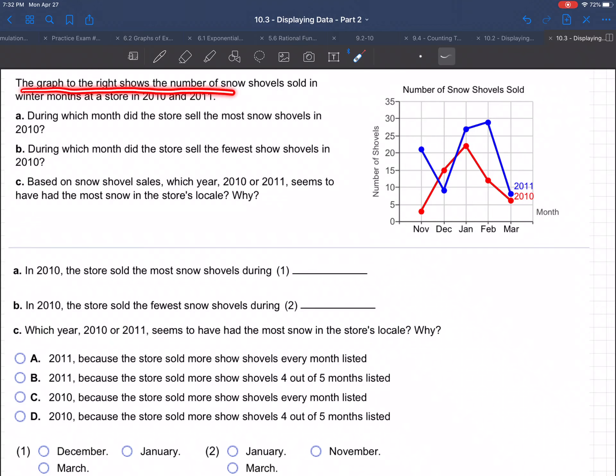The graph to the right shows the number of snow shovels sold in winter months at a store in 2010 and 2011. In November, they sold two or three snow shovels. The red graph is 2010. In December, they sold 15 snow shovels. In January, they sold maybe 22, whereas the blue graph is 2011. So that's the difference.